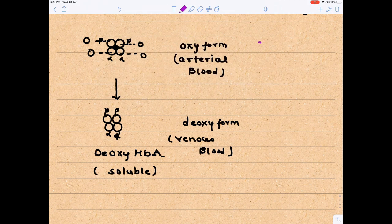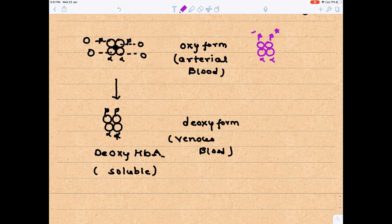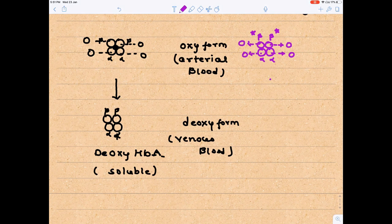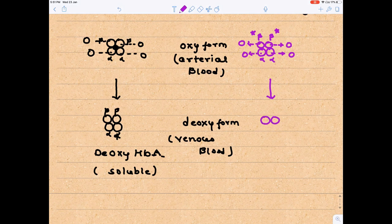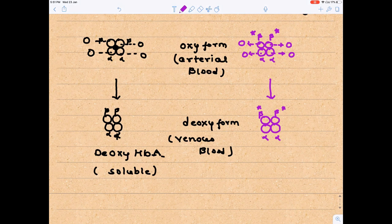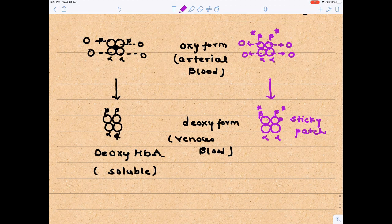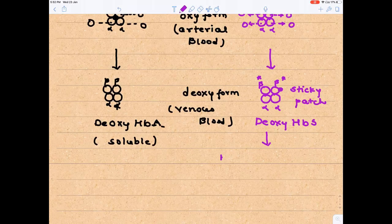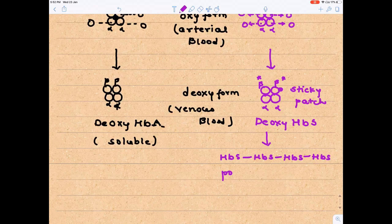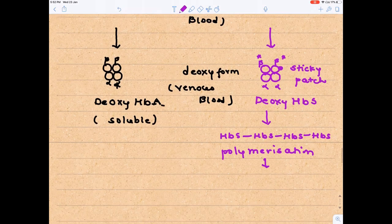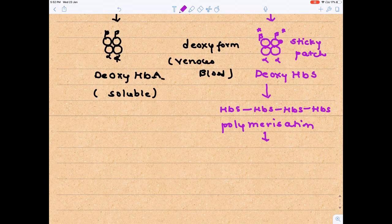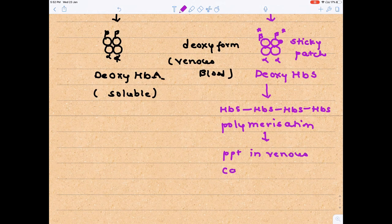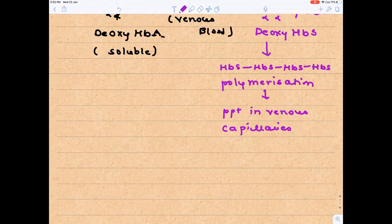The story of hemoglobin S is a little different. This is also a tetramer, 2 alpha and 2 beta, but beta is mutated. They will also accept 4 molecules of oxygen in the oxy blood. So there is no problem in the arterial blood. In the venous blood, it will convert into deoxy form. Deoxy form is dangerous because the sticky patch of the beta chain will be exposed here. This sticky patch is due to hydrophobic valine amino acid. This hydrophobic valine will cause formation of a long polymer of HBS. Due to polymerization, this hemoglobin will precipitate, and precipitation is occurring into the venous capillaries.